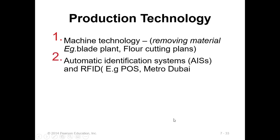The next technology is the Automatic Identification System (AIS), also called RFID. An example is Point of Sale (POS), where you show a barcode to an RFID reader and it shows the price. In the Dubai metro bus system, you go to self check-in, show your identity card, money is deducted from your card, and you check into the metro. When you return, you show your card again and the amount is deducted.